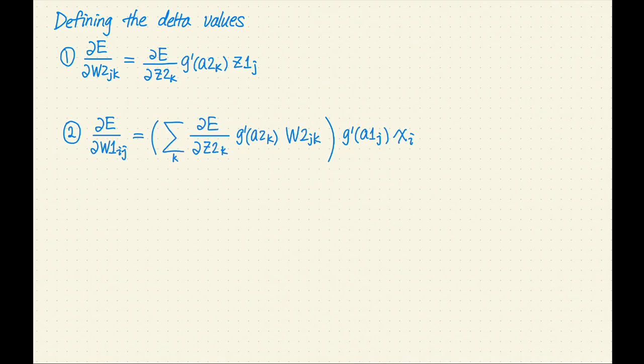We have derived some complicated derivative expressions so far. Finally, let's connect these to the delta values. Here are the simplified gradient expressions again. Note that the last term in each expression is the input value for that layer. Let's disregard the last term in both expressions. Take the rest of the expression and define it to be the delta value.